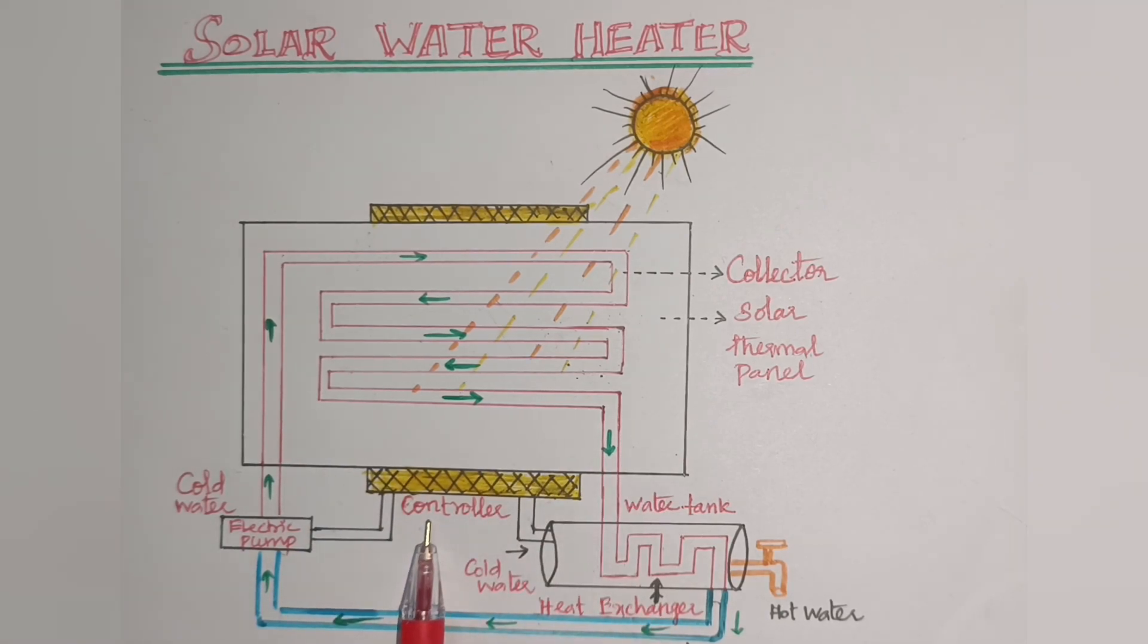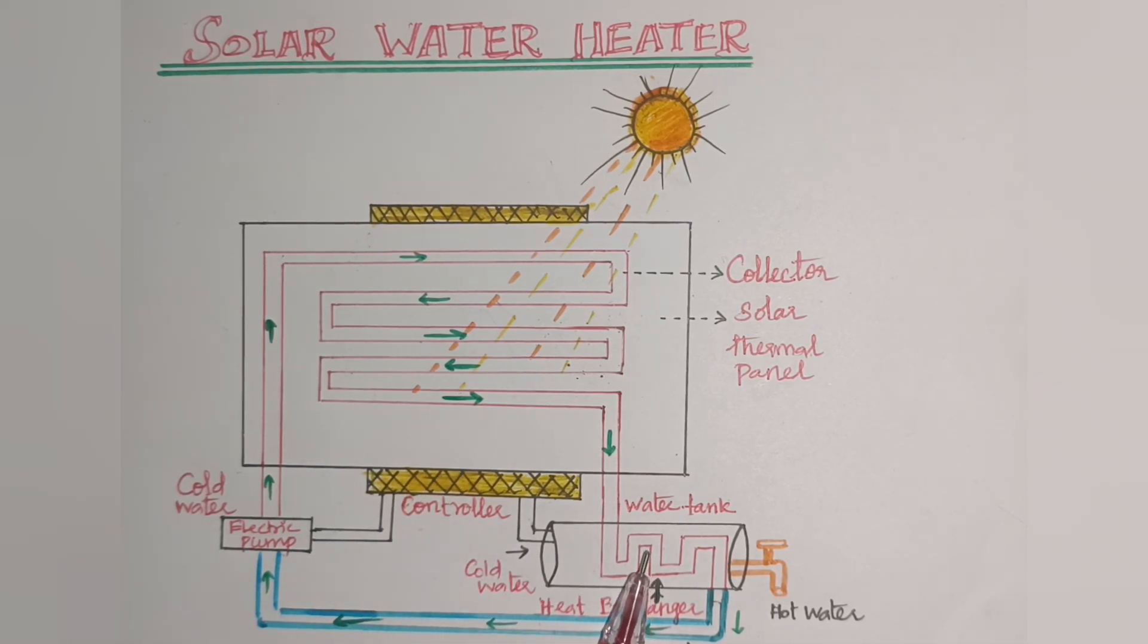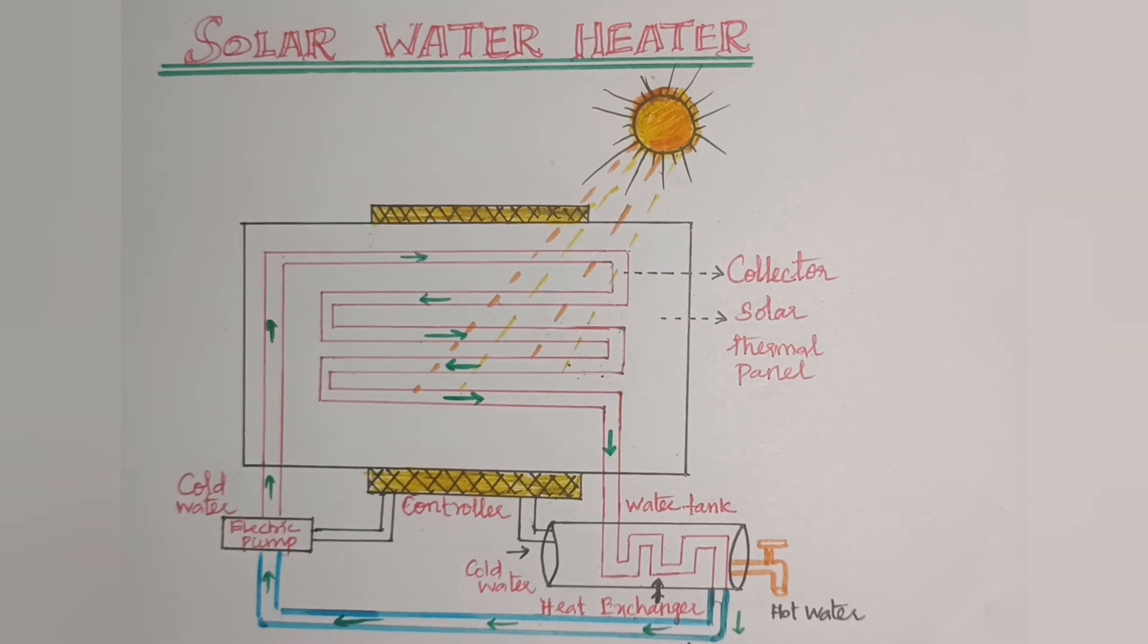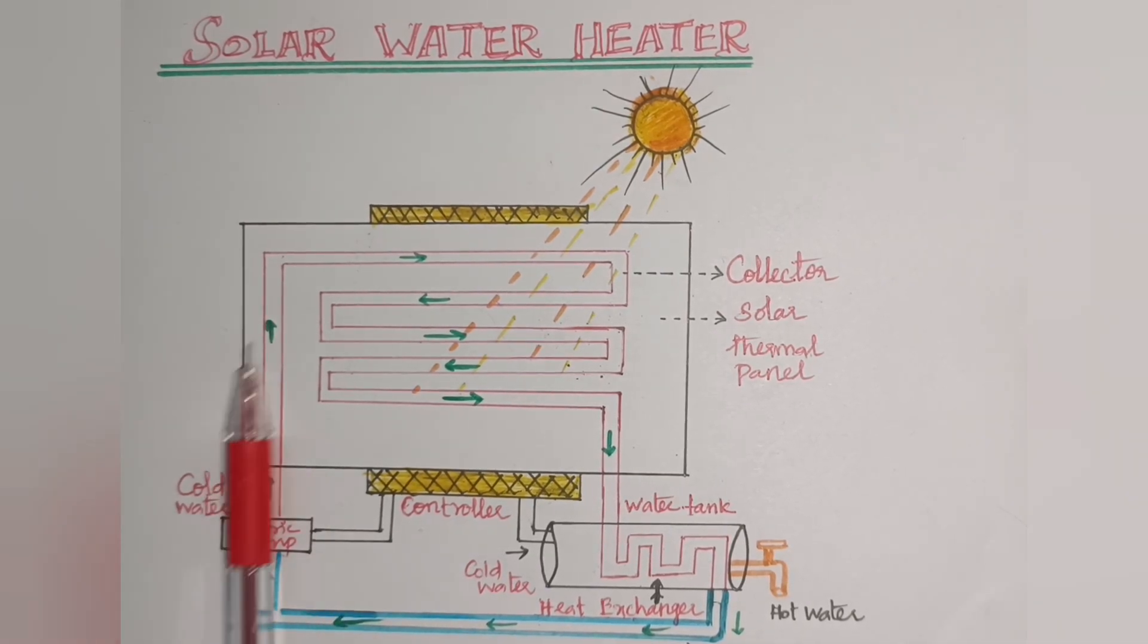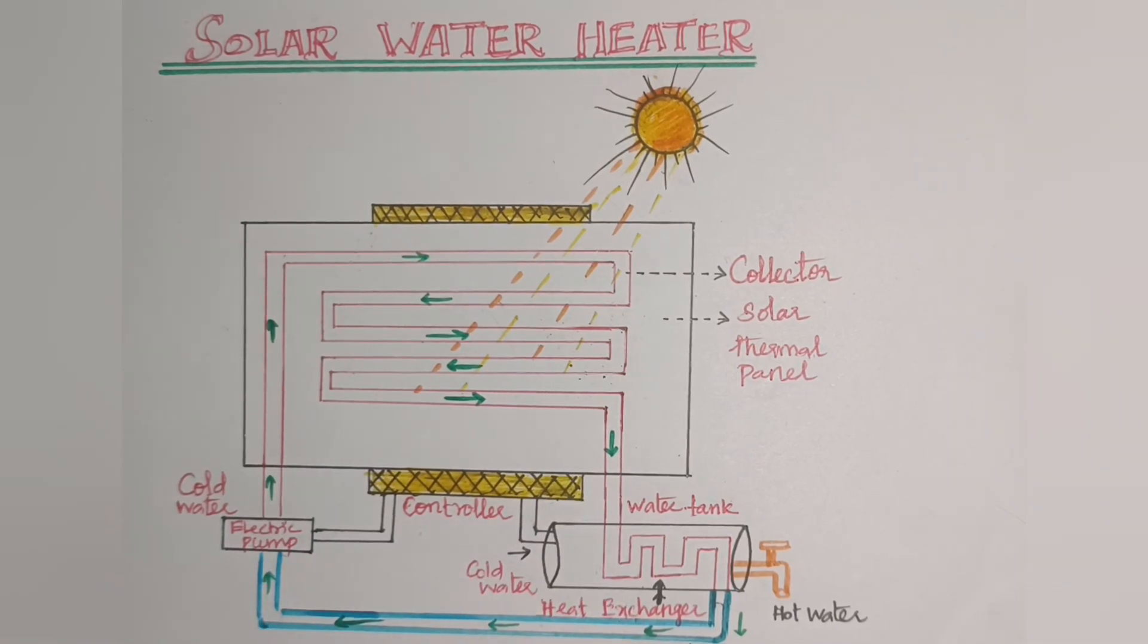The total system is controlled by the controller. There are two types of control. One, the water tank is filled by the controller automatically. Then auto cut-off when the tank is filled. These are the construction. Working.